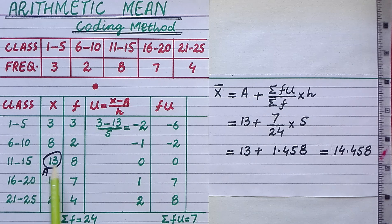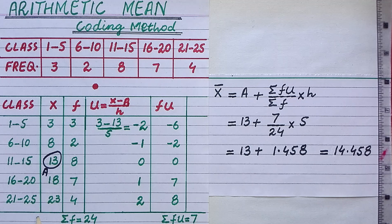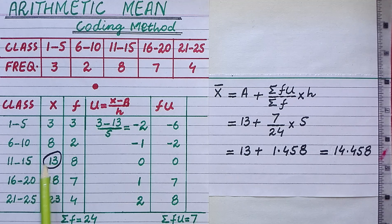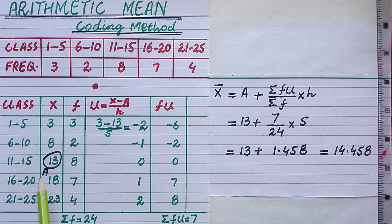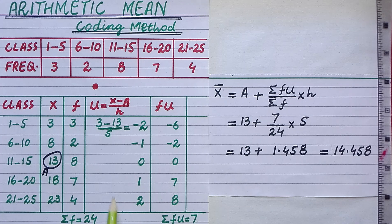That is how we find the value of class mark x of each class. Normally, one of the values of x is taken as the assumed arithmetic mean. Here we have taken 13 as the assumed arithmetic mean, though you may take any other value of x as the assumed arithmetic mean.